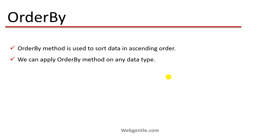First, let's understand what the OrderBy method is. OrderBy is used to sort data in ascending order only. We can apply OrderBy on any type — it is not type-dependent. You can use characters, integers, decimals, floats, or any kind of data type in OrderBy, but it can only sort data in ascending order.